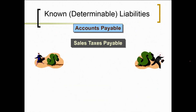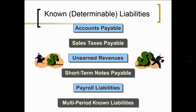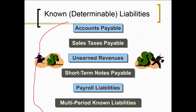There are a lot of liabilities that are known or determinable — meaning we know who we have to pay, we know how much we have to pay, and we know when we have to pay. Included in these are the things listed on this slide: accounts payable, sales tax payable, unearned revenues, and payroll. Those are very specific as far as who we pay, how much we pay, and when we pay.